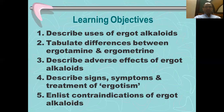So the learning objectives of this second lecture on ergot alkaloids: number one, describe uses of ergot alkaloids; second, tabulate differences between ergotamine and ergometrine; number three, describe adverse effects of ergot alkaloids; number four, describe signs, symptoms, and treatment of ergotism; and lastly, list contraindications of ergot alkaloids.